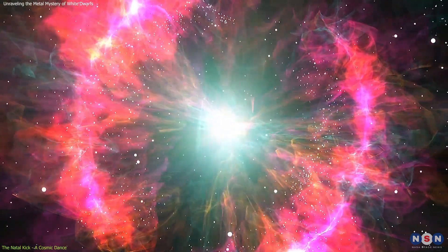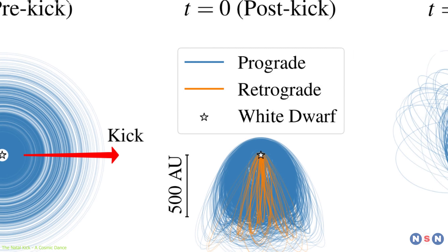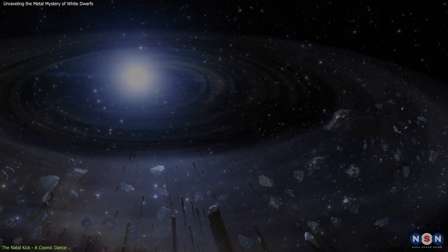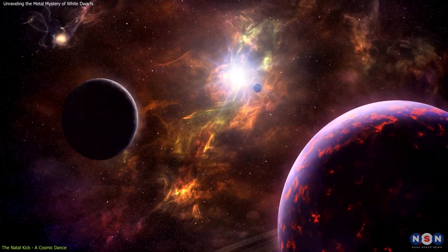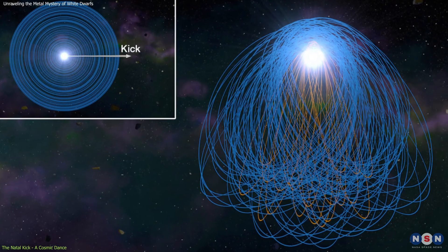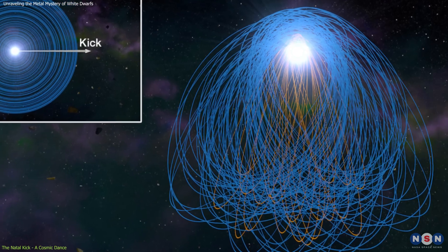Computer simulations have provided detailed insights into these effects, showing how the natal kick alters the orbits of nearby bodies like comets, asteroids, and planets formerly within the star's system. These changes often lead to more elongated and aligned orbits...